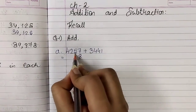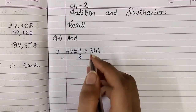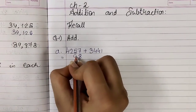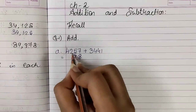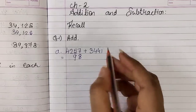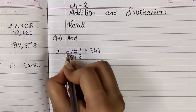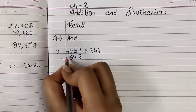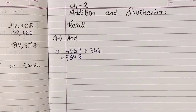Now, here it is 5, here it is 4. So students, what is 5 plus 4? 9. दोनों की 100 की place पर क्या है? 2 and 4. So 2 plus 4 is 6. And in the thousands place, 4 plus 3 is 7. So students, इसका answer हो गया: 7,698.